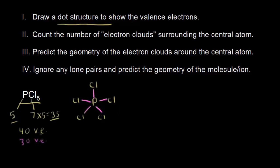Remember, you start putting those leftover electrons on your terminal atoms. So we're going to put those on the chlorines. Each chlorine is going to follow the octet rule, so each chlorine needs 6 more electrons. Now each chlorine is surrounded by 8 valence electrons. Adding 6 more electrons to 5 atoms — 6 times 5 is 30 — so I have now represented all of my valence electrons on the dot structure.